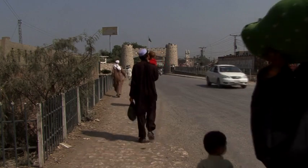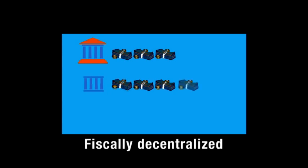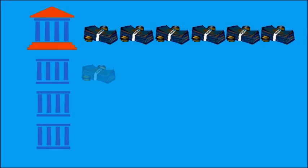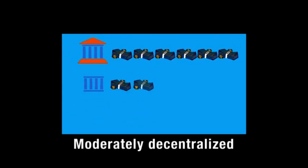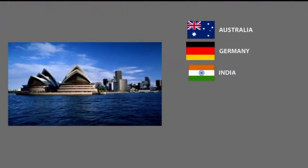Federal countries have chosen to do this in different ways. In some, such as Canada and Switzerland, the constituent units collect over half the revenues and the federal government collects less than half. We call these fiscally decentralized federations. In other federal countries, the federal government collects between 60 and 75 percent of the revenues, while the states, provinces, or other units collect the rest. This group includes Australia, Germany, India, Spain, Belgium, and Brazil.